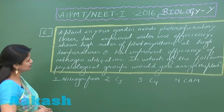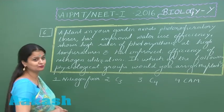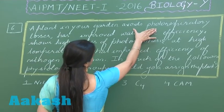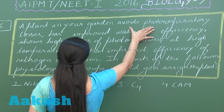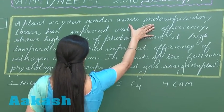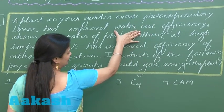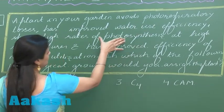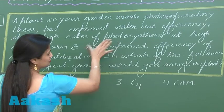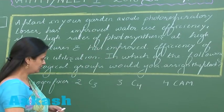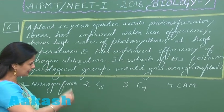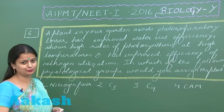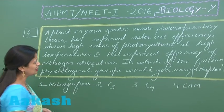In question number six, we have to look for a plant in which the photorespiratory loss is less or avoided, it has improved water utilization efficiency, and the photosynthetic rate is also high. So these are the three categories of plants — C3, C4, and CAM — with respect to photosynthesis.